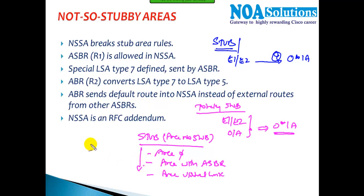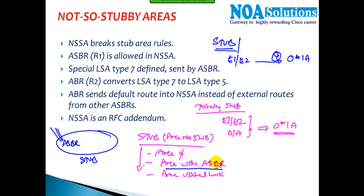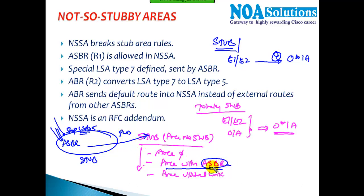But what if I have configured one area as a stub and that area also has an ASBR? That gives us an exception. By default, when you configure redistribution in a stub area, it simply stops LSA5 advertisements automatically and will not pass external routes to other areas. But what if I want to pass external routes through the stub area and also have an ASBR configured in that stub area?